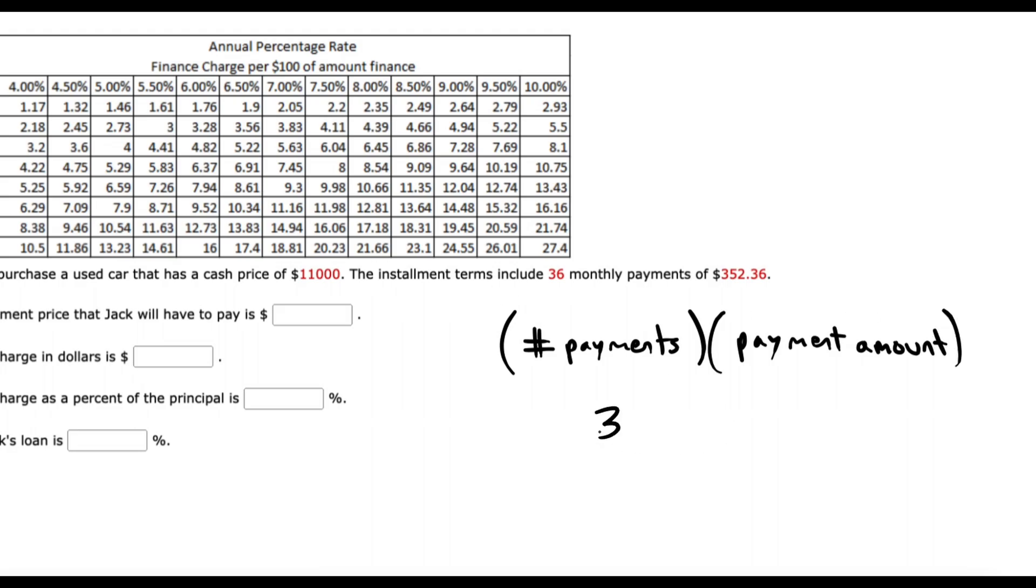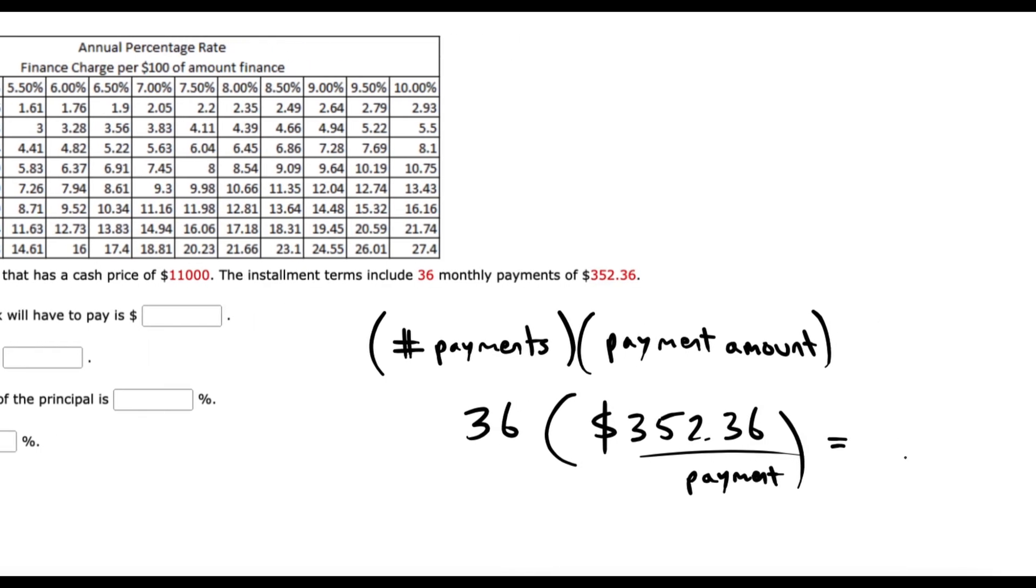So it's 36 payments, and we're going to multiply by the $352.36 per payment. And it's $12,684.96.